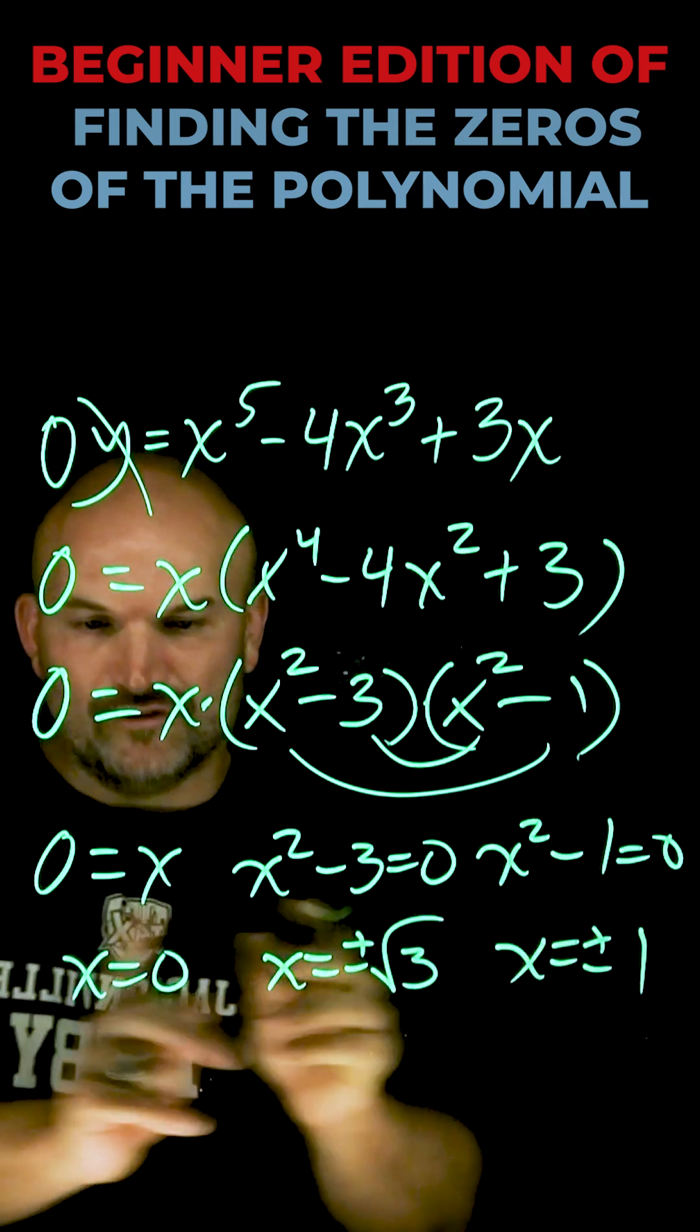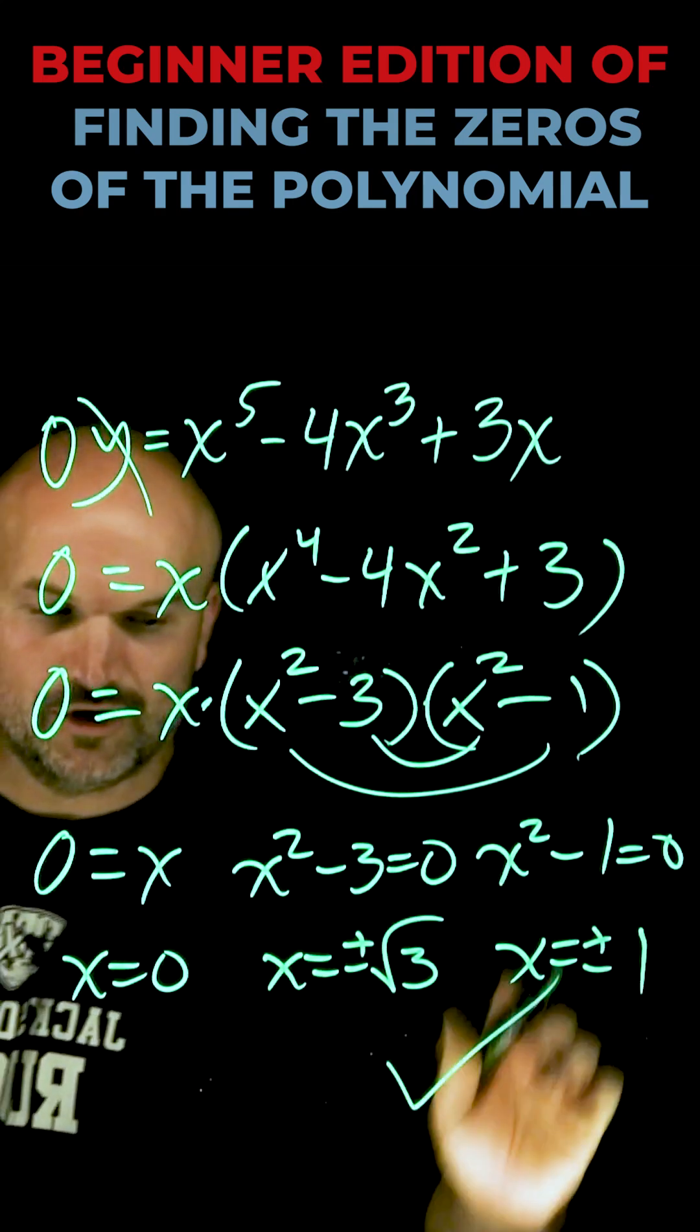Now I have found all five zeros with a multiplicity of 1 of this polynomial function.